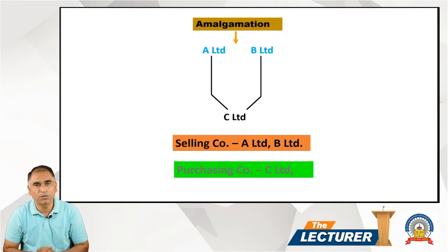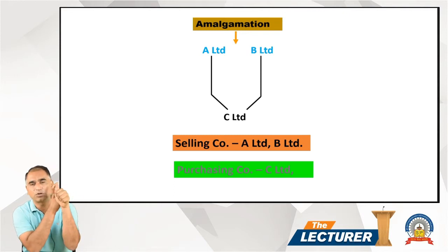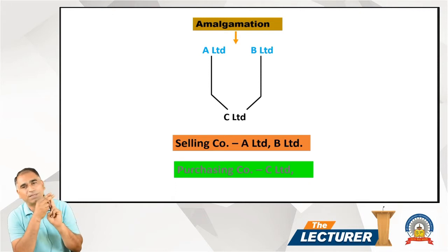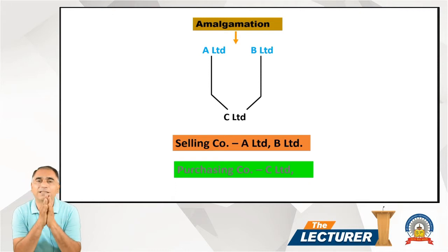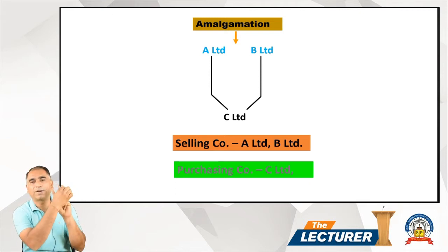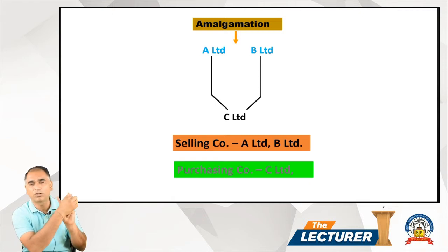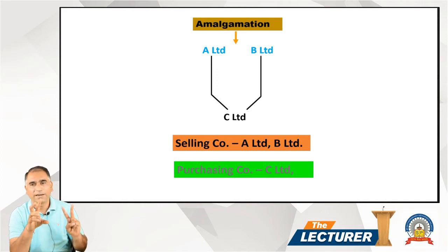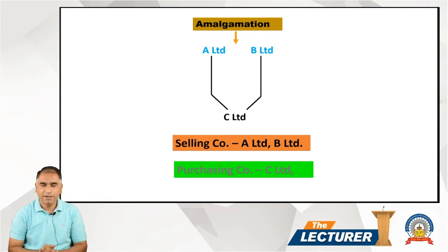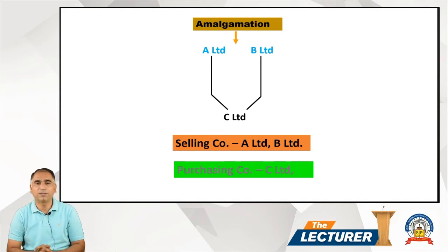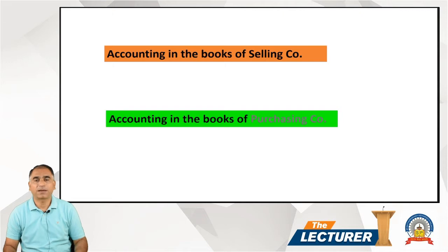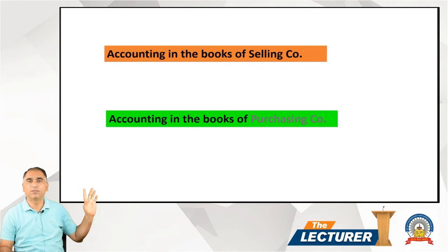In examination, the question may ask for accounting treatment in the books of A Limited, B Limited, or C Limited. A and B are the selling companies, C is the purchasing company. Throughout the entire chapter, we have to learn only two things: accounting in the books of the selling company, and accounting in the books of the purchasing company. You may have two, three, or four selling companies and one purchasing company - whatever is demanded in the exam, once you are comfortable, you can handle it.